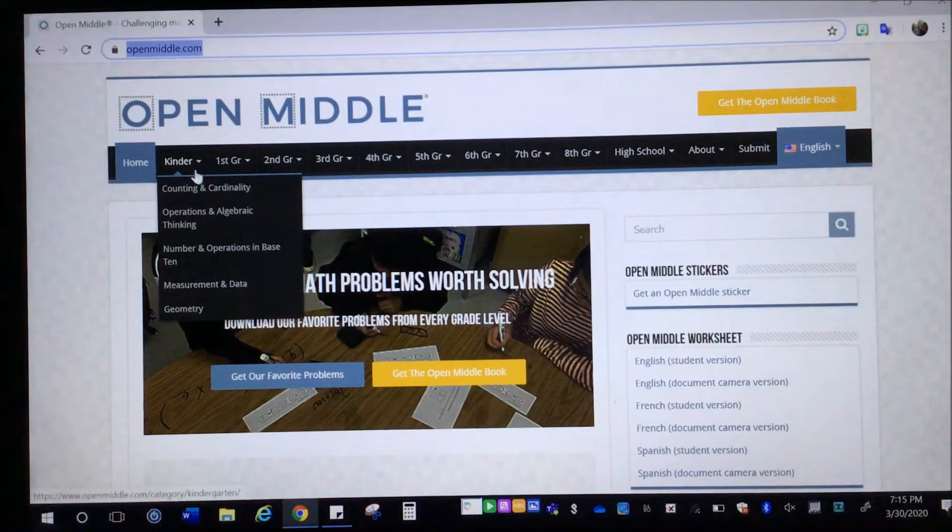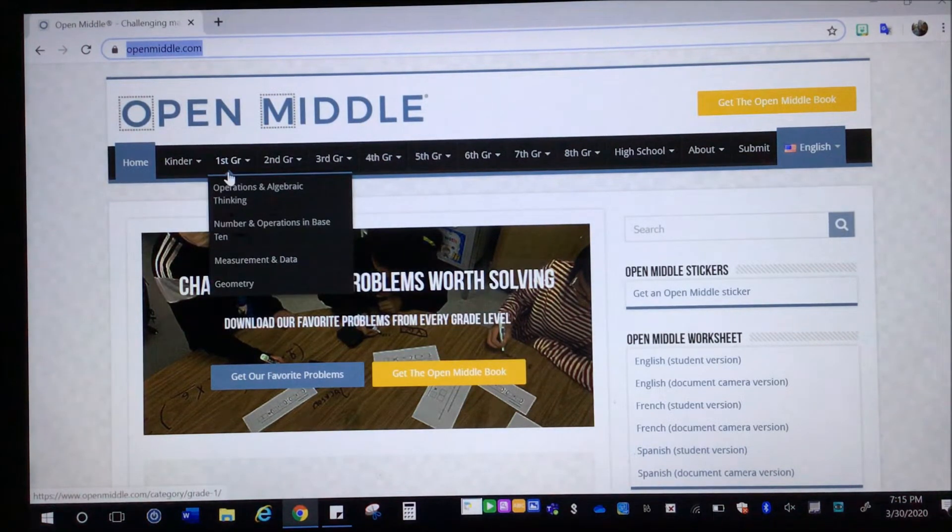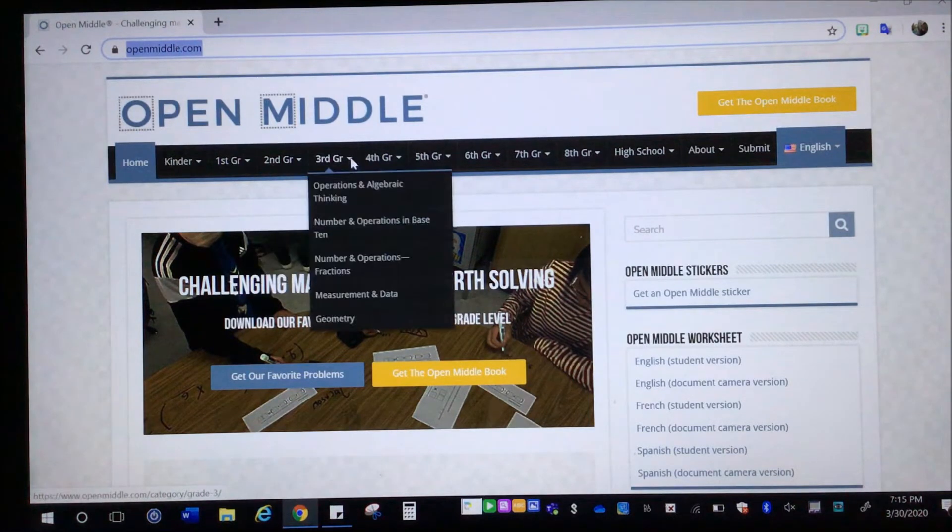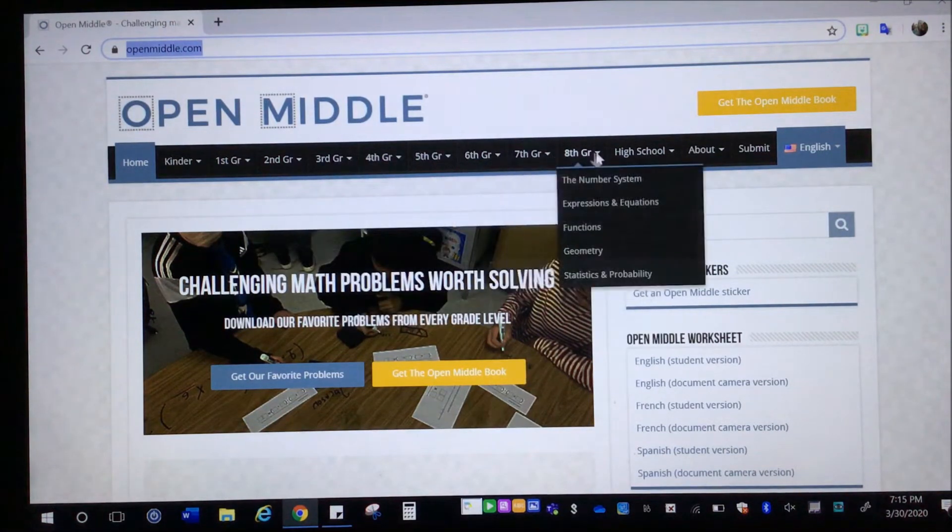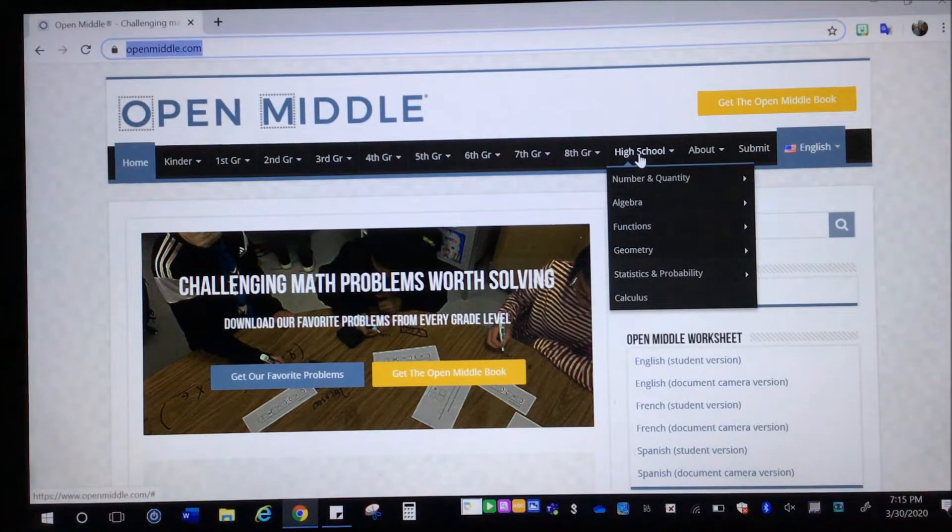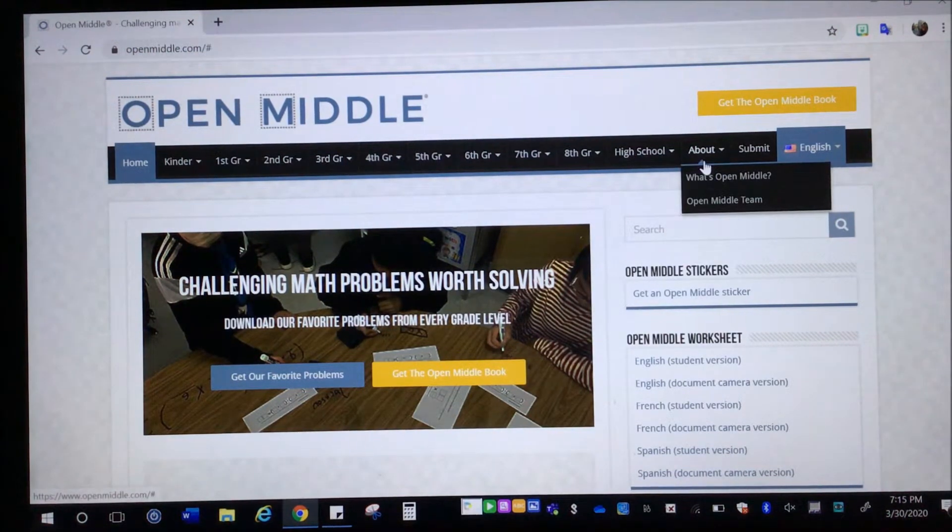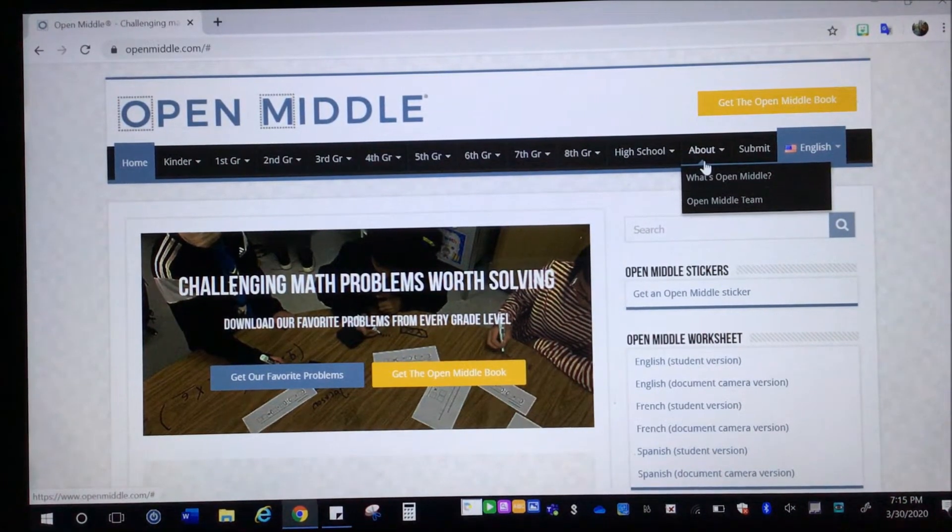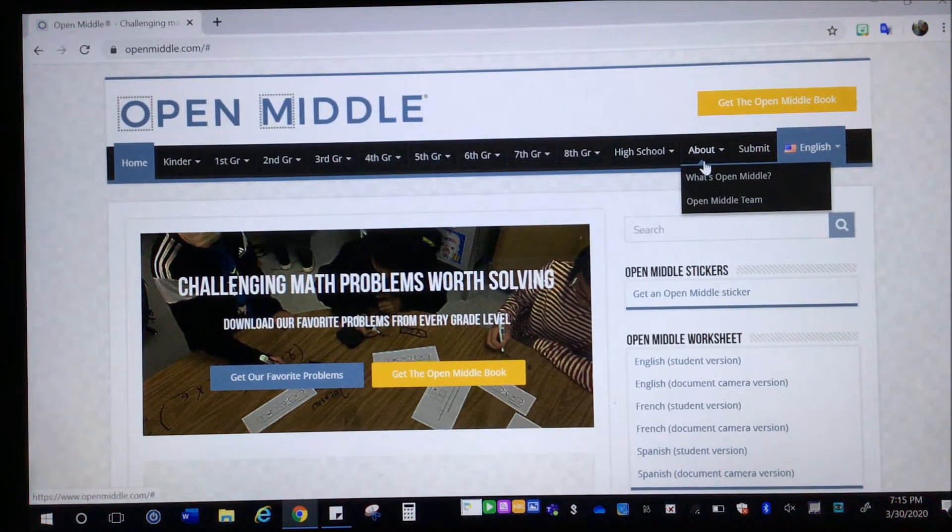Then what I normally go to as a teacher, under each grade, list all of the math domains for that grade. And you can click on them and find specific examples. They do have after middle school, just high school in general. Then there's an about section that tells you more about open middle. A lot of it just explains what I shared about how it's founded by and how there's a definite closed beginning and end, but there's an open middle part where you get to solve.